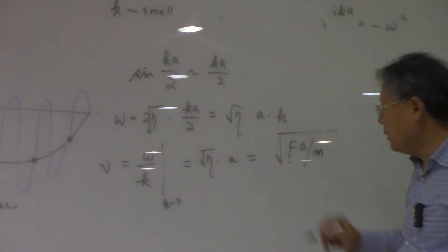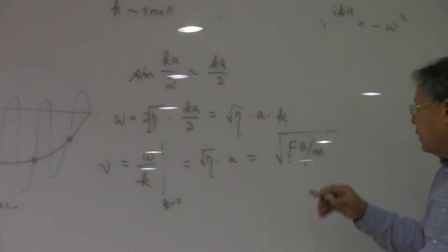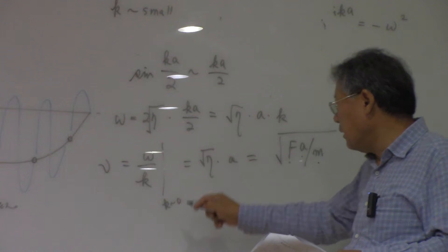This is the Coulombic force between the atoms. A is the distance, the lateral distance, and M is the mass, so we are going to have a straight line.